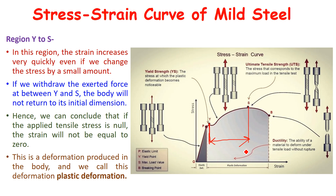From Y point to S point, the material undergoes plastic deformation. What does plastic deformation mean? Plastic deformation means that if you withdraw or release the load in this zone, the material will not regain its original dimensions. This is called plastic deformation.